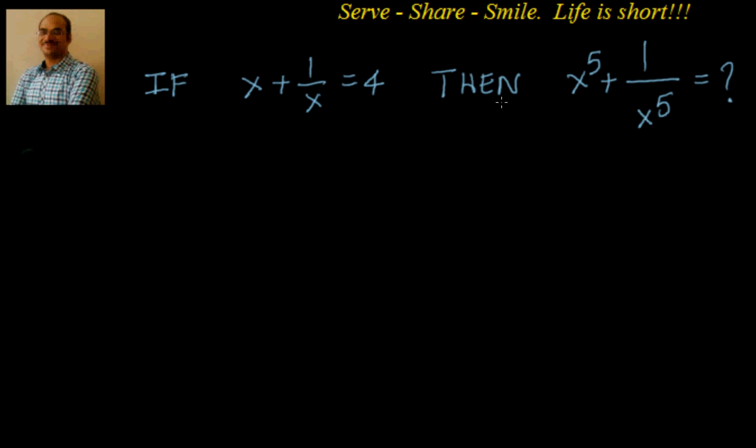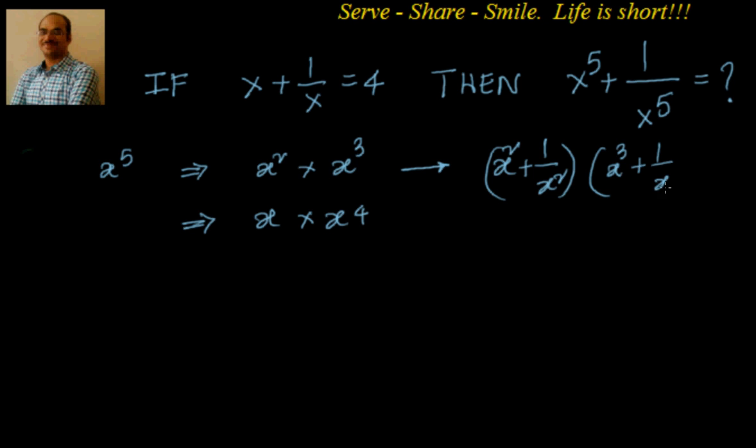We will think about how to get x power 5. x power 5 can be obtained by x square into x cube. Or, I can also do x into x power 4. That means in our situation, we can get it by multiplying x square plus 1 by x square into x cube plus 1 by x cube. But we will have some other terms which we will manipulate.